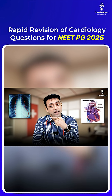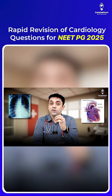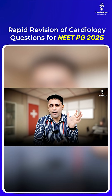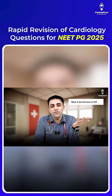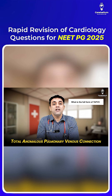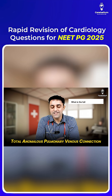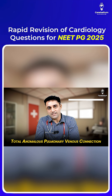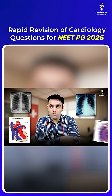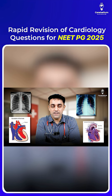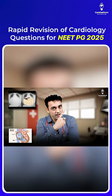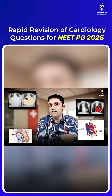Remember, figure of 8 appearance you don't see just in TAPVC — it's specifically supracardiac TAPVC. TAPVC stands for total anomalous pulmonary venous connection. To recap: figure of 3 is coarctation of aorta, figure of 8 is supracardiac TAPVC, box shape heart is Ebstein anomaly, and boot shape heart is tetralogy of Fallot.